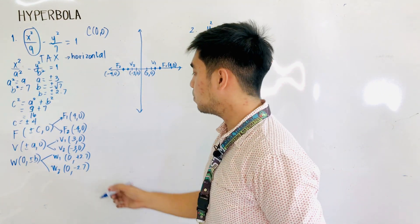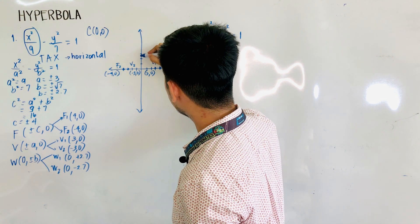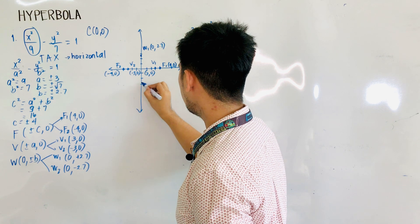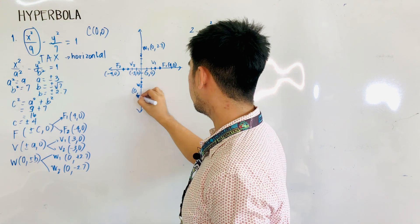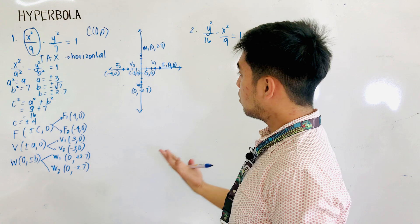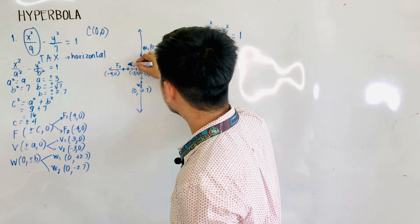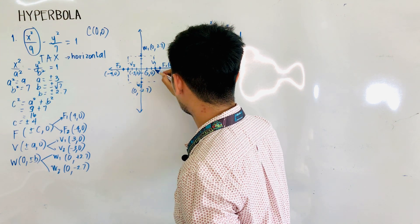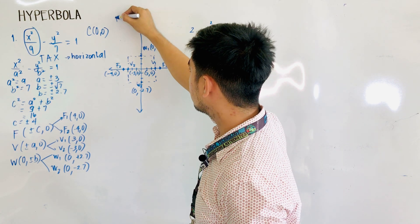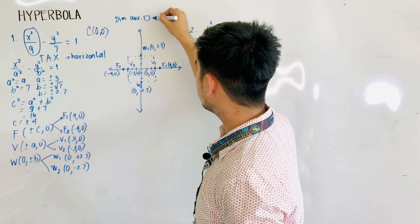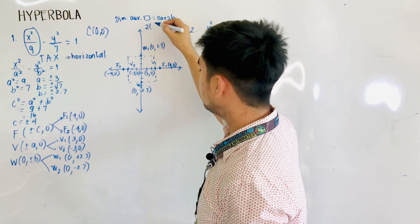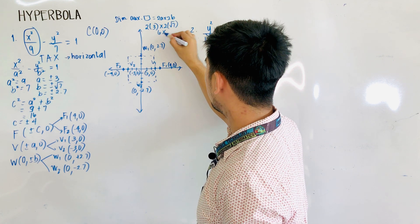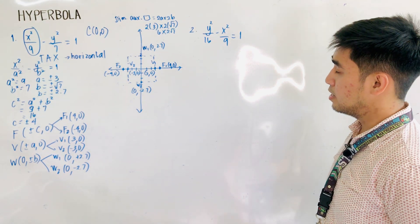For the co-vertices at 0, plus or minus 2.7: W1 is at (0, 2.7) and W2 is at (0, -2.7). We are now ready to graph the auxiliary rectangle by connecting the vertices and co-vertices. The dimension of the auxiliary rectangle is 2a by 2b, which is 2 times 3 by 2 times square root of 7, giving us 6 by 2 square root of 7.